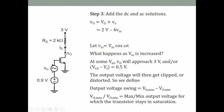A key quantity for all amplifiers is the output voltage swing, defined as the range of output voltages for which the transistor stays on and in saturation. It equals V_out_max minus V_out_min. For this circuit, V_out_max = 3 V and V_out_min = 0.5 V, giving an output voltage swing of 3 - 0.5 = 2.5 volts.